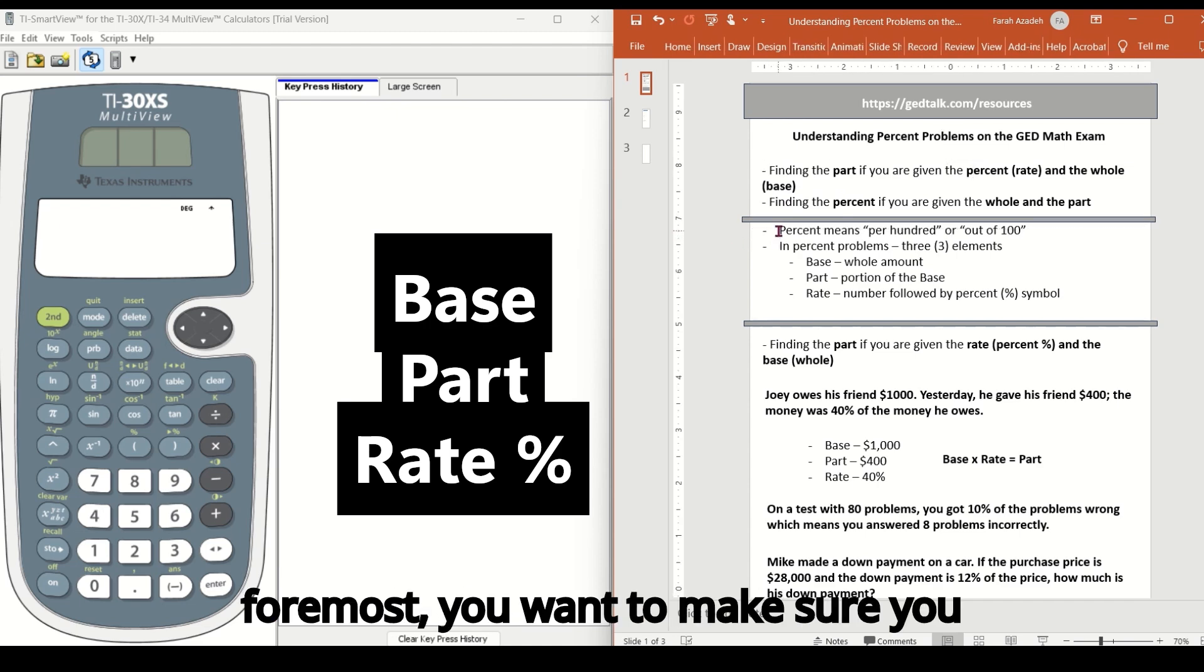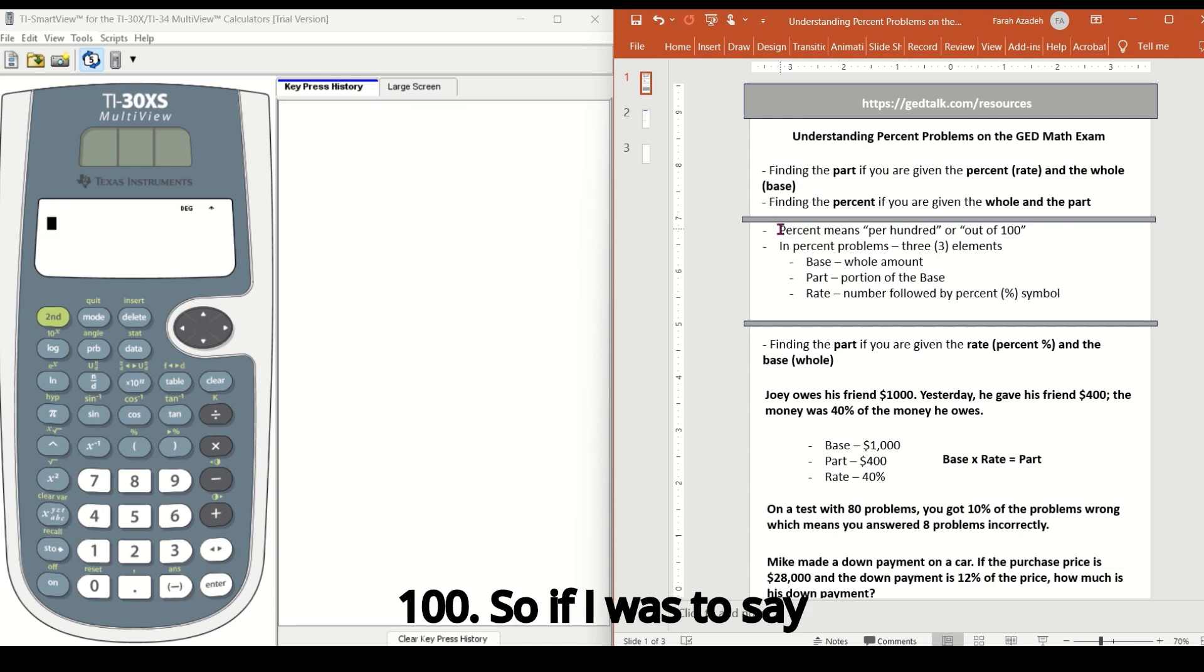So first and foremost, you want to make sure you understand that percent means per hundred or out of 100. So if I was to say that I had a hundred dollars and I spent $50 of that, that's 50%. If I spent $25, that's 25%. Whatever amount it is, it's going to be that percent because it's out of 100.